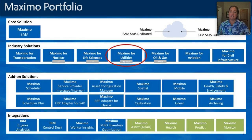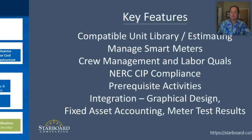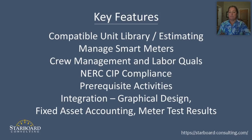Before choosing an industry solution, it's important to understand the key features that make the solution different from core Maximo. If you might only use a small piece of the added capability, it might make more sense to configure core Maximo than to buy an industry solution and not use most of its features. Maximo for utilities is designed to meet specific requirements for transmission and distribution companies. We mostly see it used by electric distribution and, to a lesser extent, gas and water.